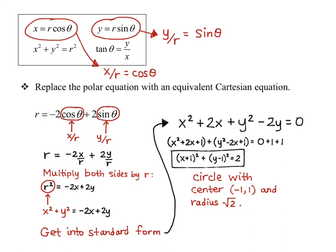So we've changed into Cartesian coordinates in a form that we recognize as the standard equation of a circle. Look at your original polar equation and take note of the format that would give you a circle.